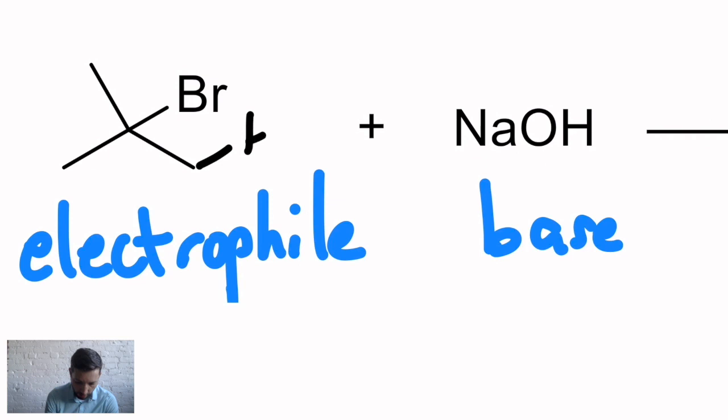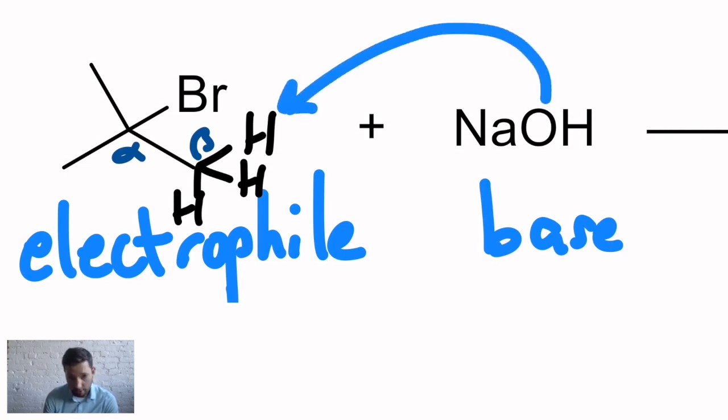Beta means one away from the carbon attached to the leaving group. So I'll label them here. That's alpha, where the bromine is attached. And right next to it is the beta position. So draw an arrow from the hydroxide oxygen to that H. Draw another arrow from one of the CH bonds to become a CC pi bond. And then the carbon bromine bond breaks.